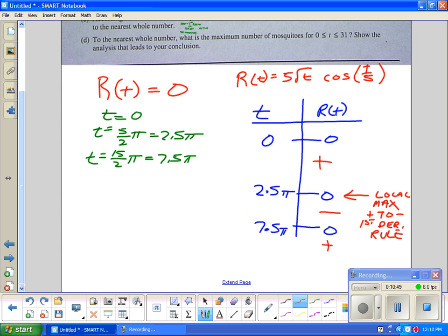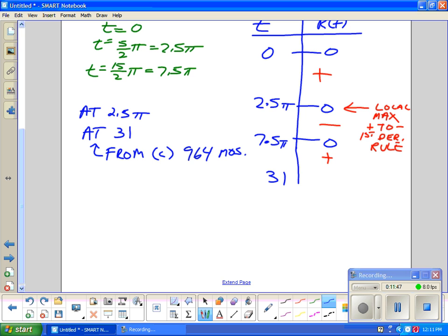I am missing one major fact. What's the other thing I have to consider when I think about maximum? Critical points and... the endpoints. I'm going to have to consider the endpoints, so I need to consider at 2.5π for t and at 31. Letter C just did 31, gave you 964 mosquitoes.